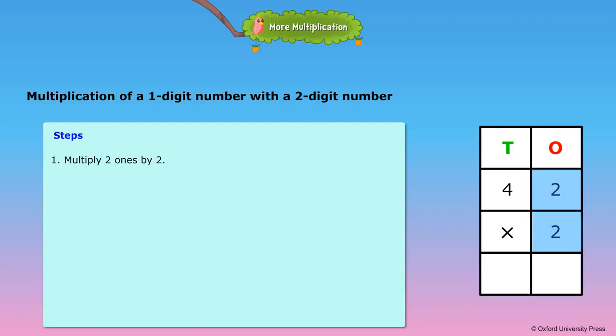Multiply two ones by two. 2 into 2 is equal to four ones. 2. Write four in the ones place.